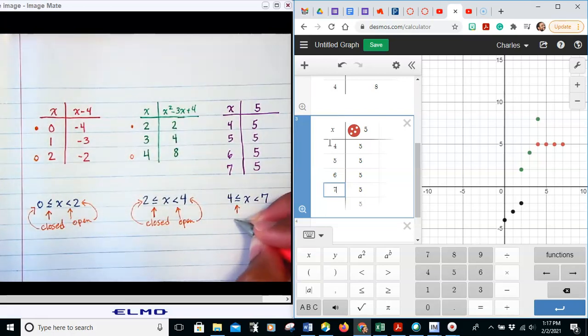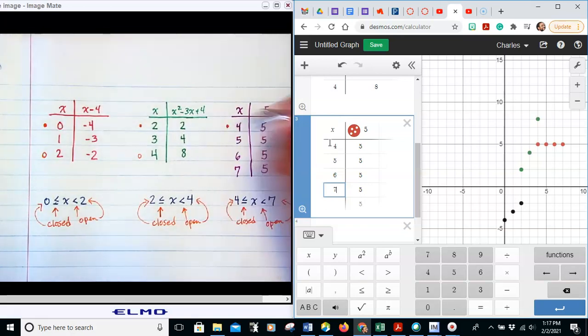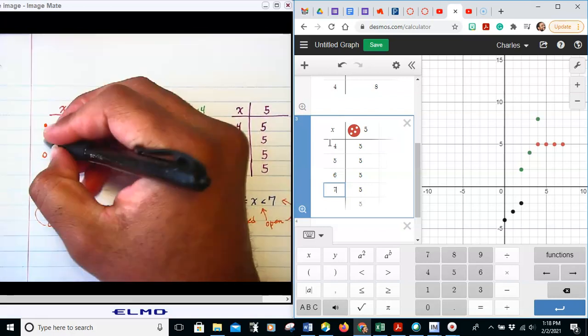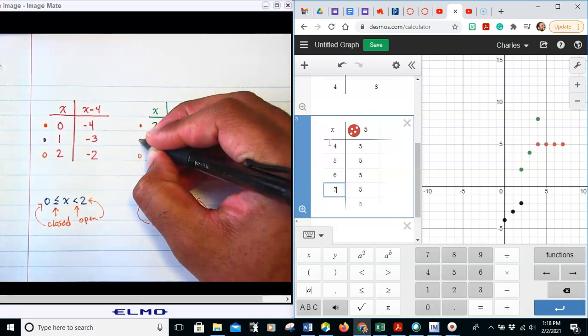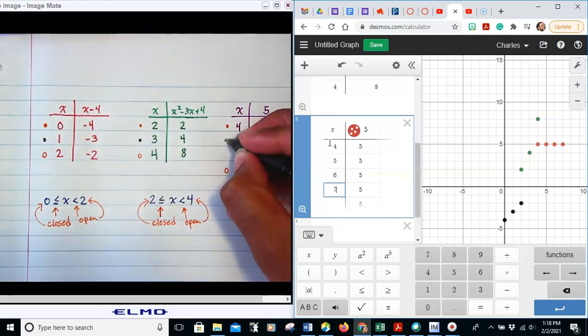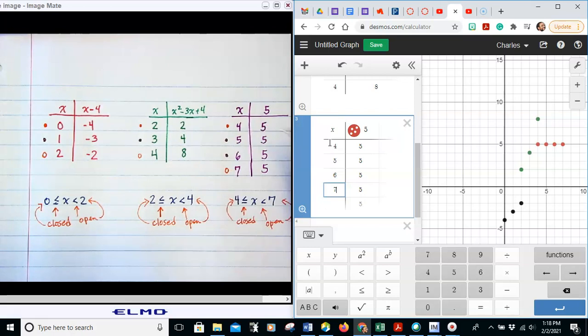And then the last part here, this is closed for 4, open for 7. Again, because the less than sign has no equal to, it's open; equal to, it has closed. And then remember again, anything that is other than an endpoint is automatically closed. So here for everything else we get closed, every other point is closed.